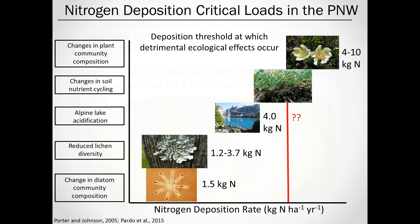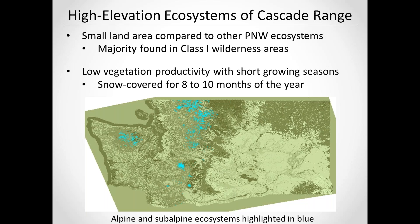We have these subalpine and alpine systems across the Northwest. I was looking at them particularly in the Cascade Range spanning Washington and Oregon. Although they're a very small land area compared to some other systems, the majority of subalpine and alpine systems are found in these Class 1 wilderness areas, so we do have a legal mandate to protect them. Something interesting about these systems is that they have very low vegetation productivity because they have such short growing seasons — covered by snow for 8 to 10 months out of the year. That limits how much sunlight they can get and limits their growth, and really dictates a lot of the responses we see due to deposition.